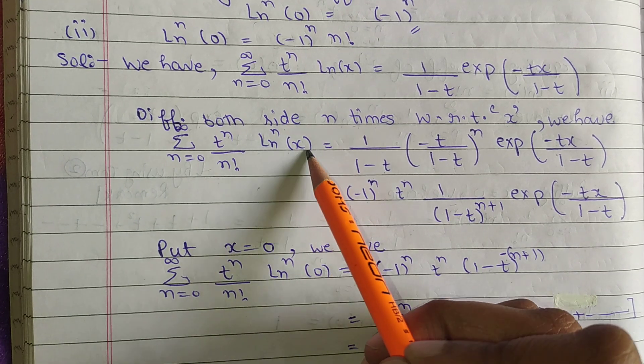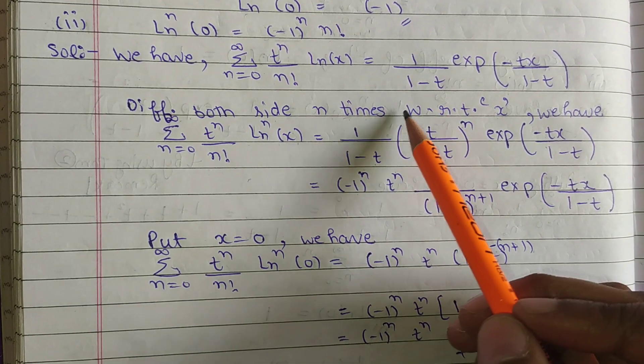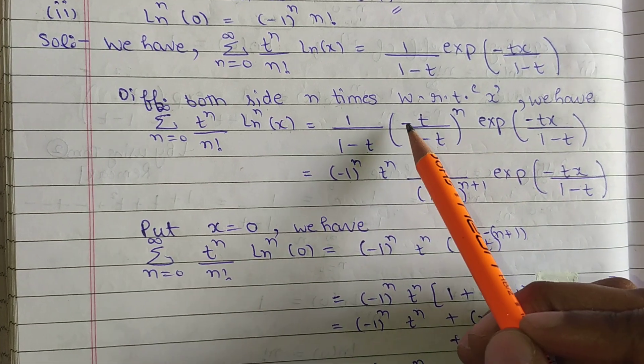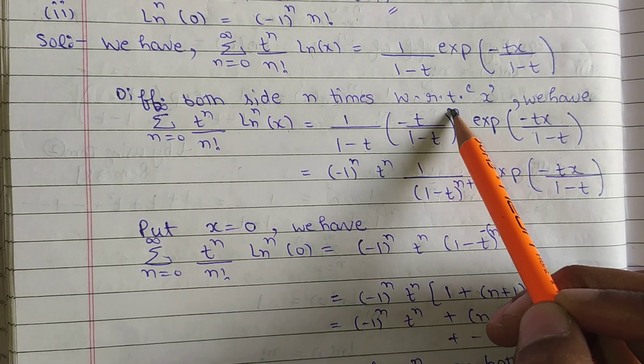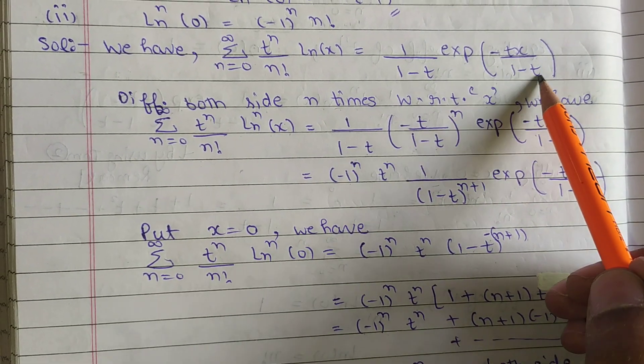upon n! ln^n(x) equal to 1/(1-t)^n times derivative (-t/(1-t))^n exponential(-xt/(1-t))